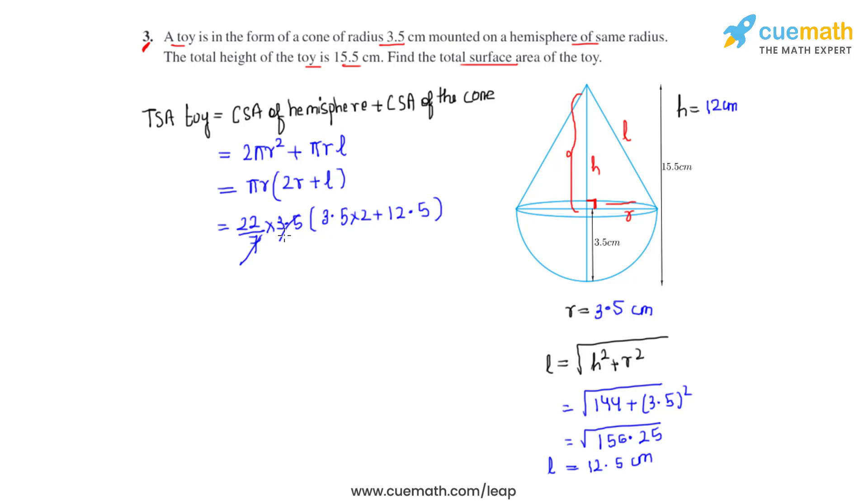Now we can cancel this out as we get 3.5 as a multiple of 7, so we get 0.5 here. 0.5 when multiplied to 22 will give us 11, which is multiplied to 3.5 × 2, which is 7, added to 12.5. That gives us 11 × 19.5, and the multiplication of these two numbers gives us the product as 214.5.